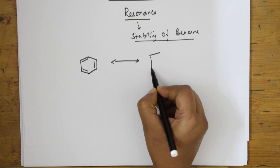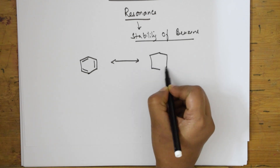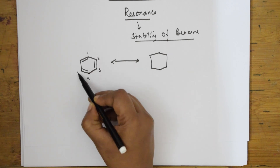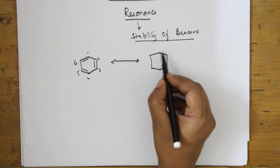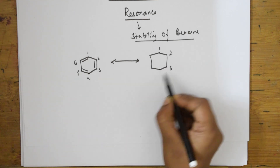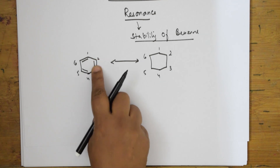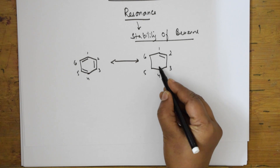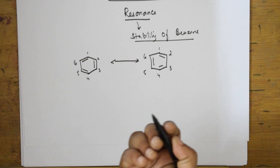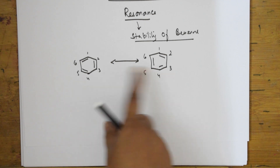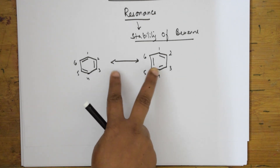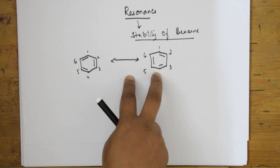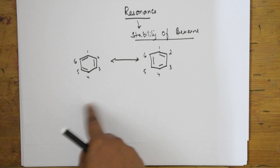The Kekulé structures are resonating structures of benzene. If I number the carbons one through six, the pi bond in one structure is between positions two and three, four and five, and six and one — while the other structure has pi bonds between one and two, three and four, and five and six. They differ in the position of the pi bonds. We will also draw the resonance hybrid.